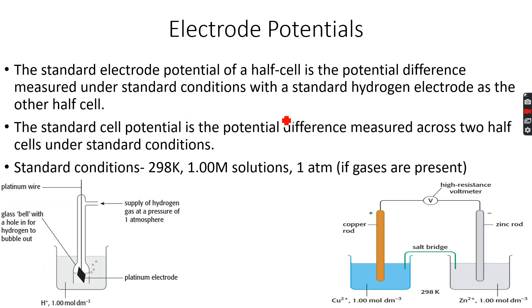So now we are done with the first topic, electrolysis and quantitative electrolysis. Now we're well-equipped with knowledge about electrolysis and we'll be able to perform calculations. Now we're doing something called electrode potentials. This is a new topic. The standard electrode potential of a half cell is the potential difference measured under standard conditions with the standard hydrogen electrode as the other half cell.